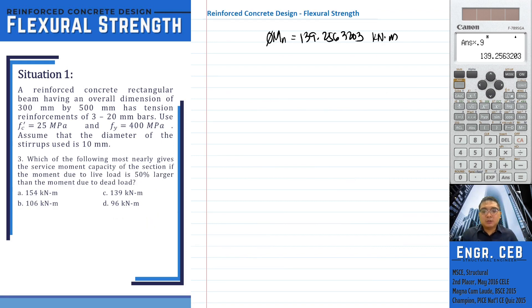Problem 3: which of the following most nearly gives the service moment capacity of the section if the moment due to live load is 50% larger than the moment due to dead load? So if we're going to relate the moment live load to the moment dead load, it is indicated that it is 50% larger. So that is 1 plus 0.5 of the M sub D. This is now the relationship of the live load and the moment dead load.